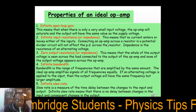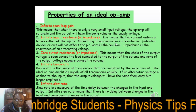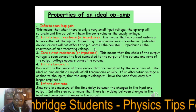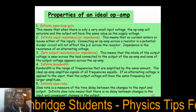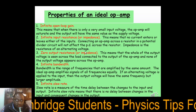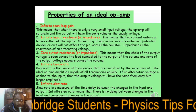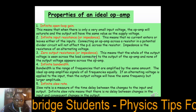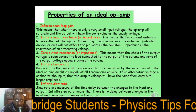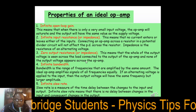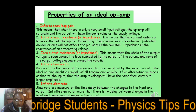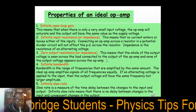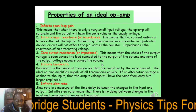Infinite input impedance means connecting an operational amplifier across a resistor in a potential divider circuit will not affect the potential difference across the resistor. Impedance is the resistance to an alternating voltage. Zero output resistance or zero output impedance means that the whole of the output voltage appears across the load connected to the output of the operational amplifier.